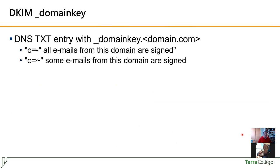Then we need to have the DKIM domain key. It is one single DNS entry with possible contents. The important ones are O equals minus or O equals tilde. It means that either some of the emails from this domain are signed, or all of the emails from this domain are signed. I would recommend O equals tilde.